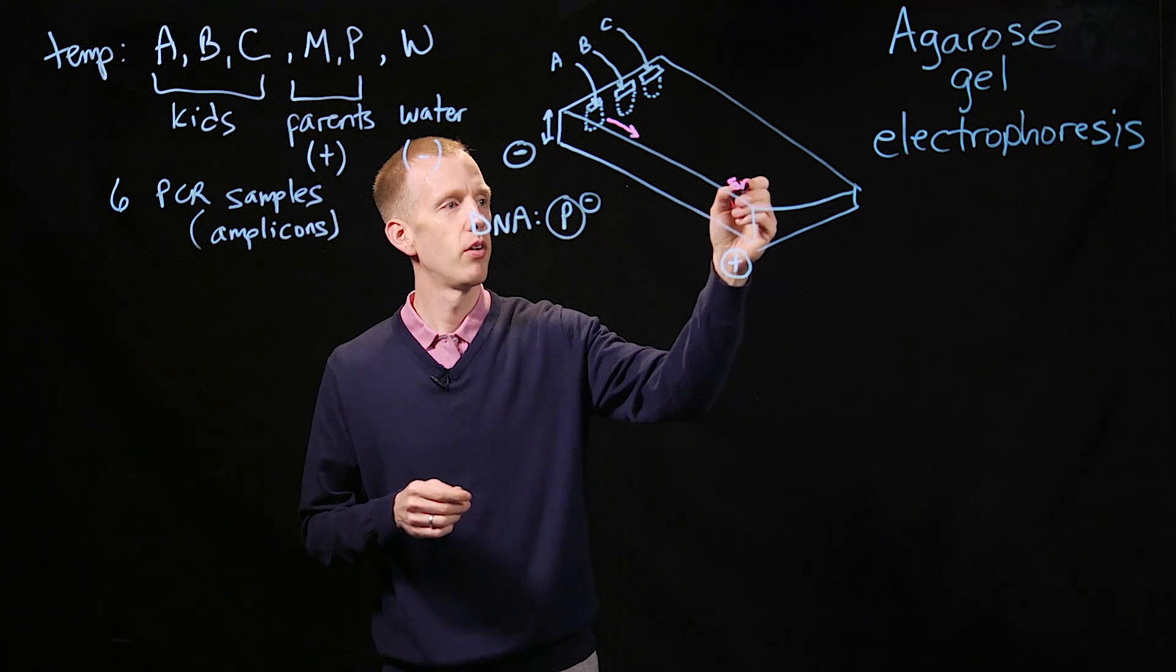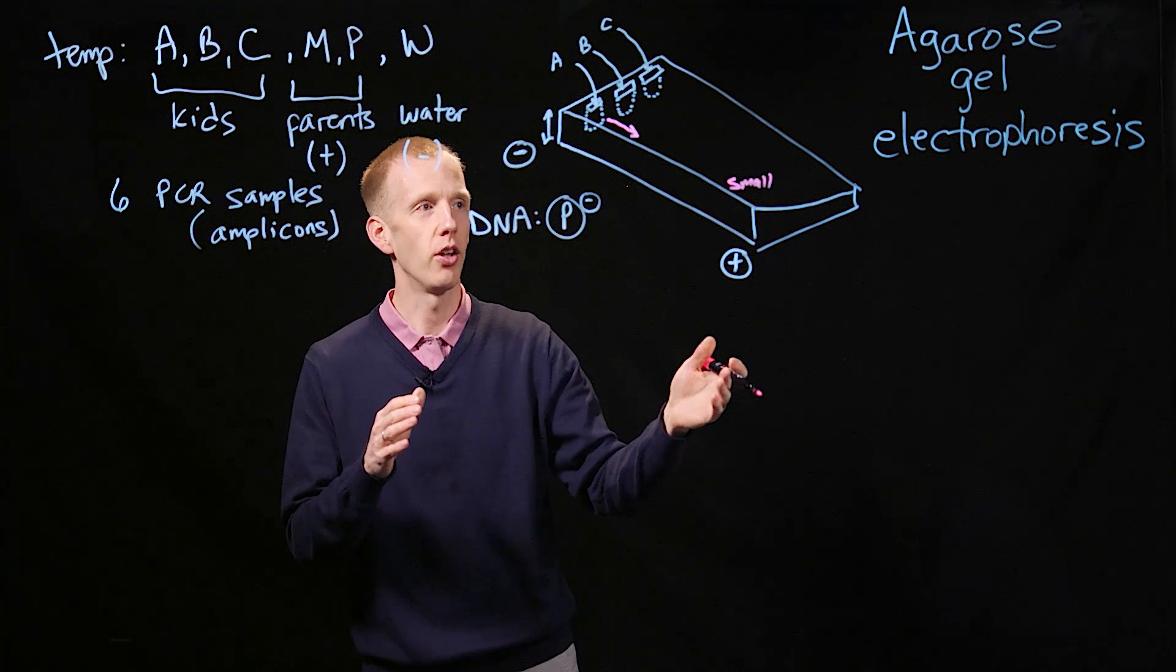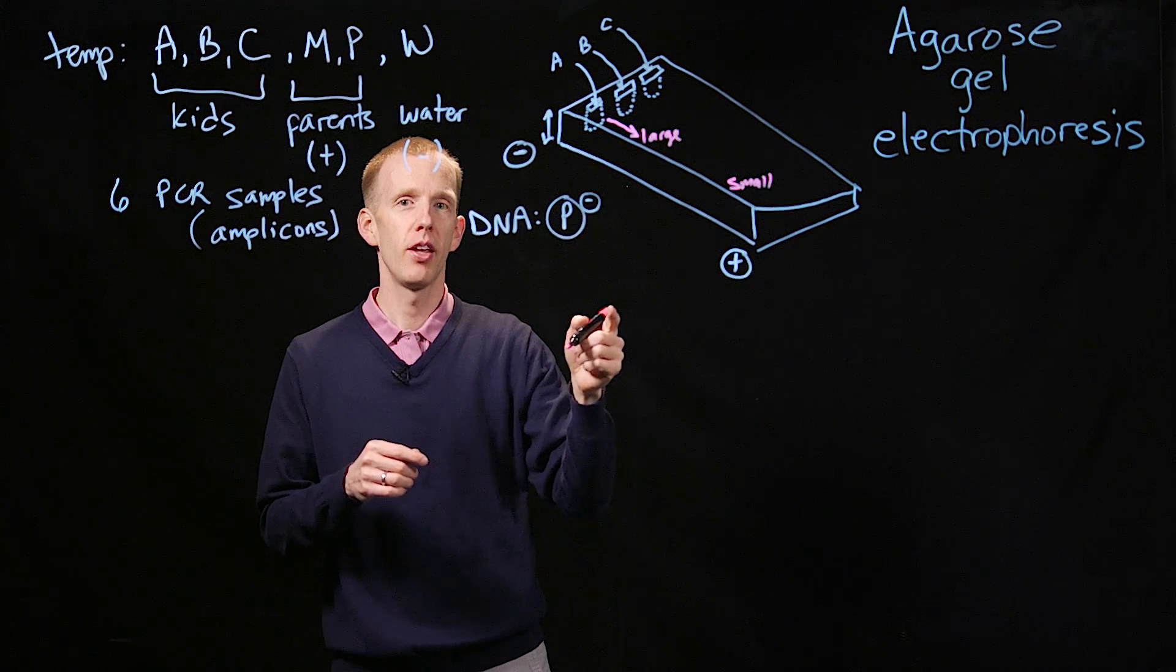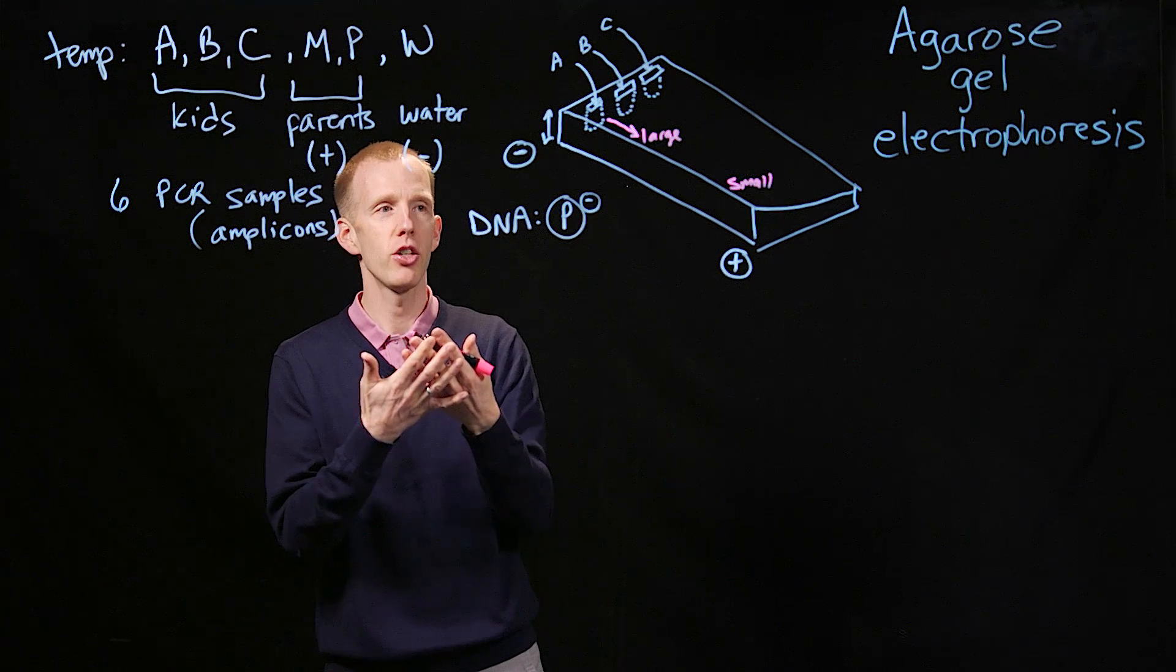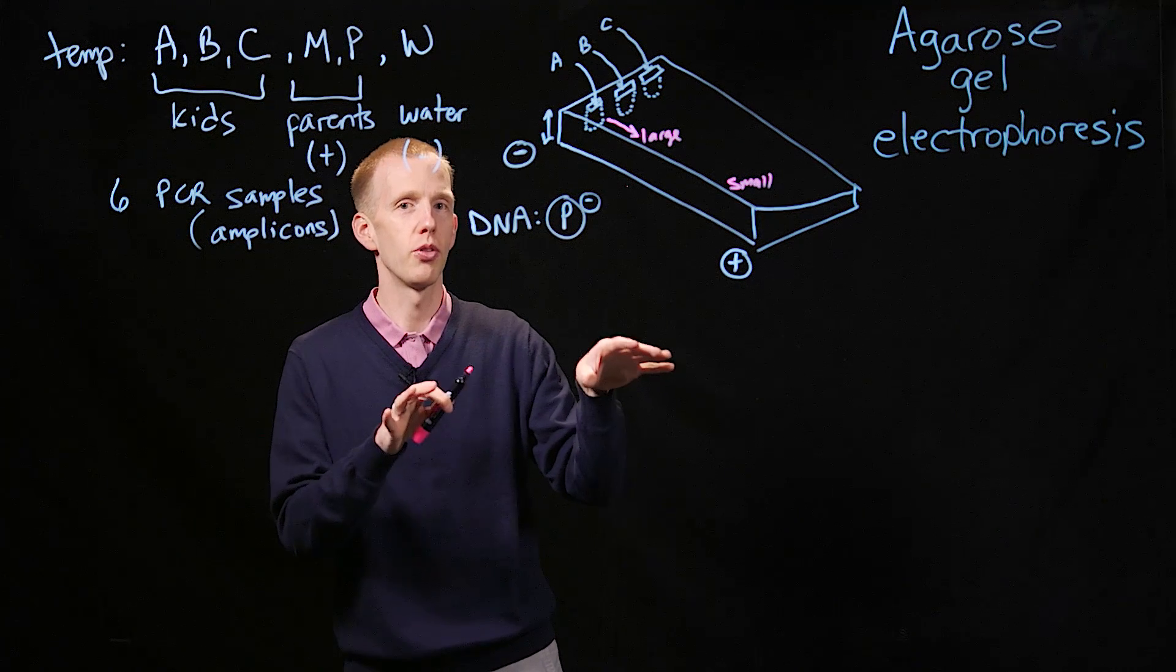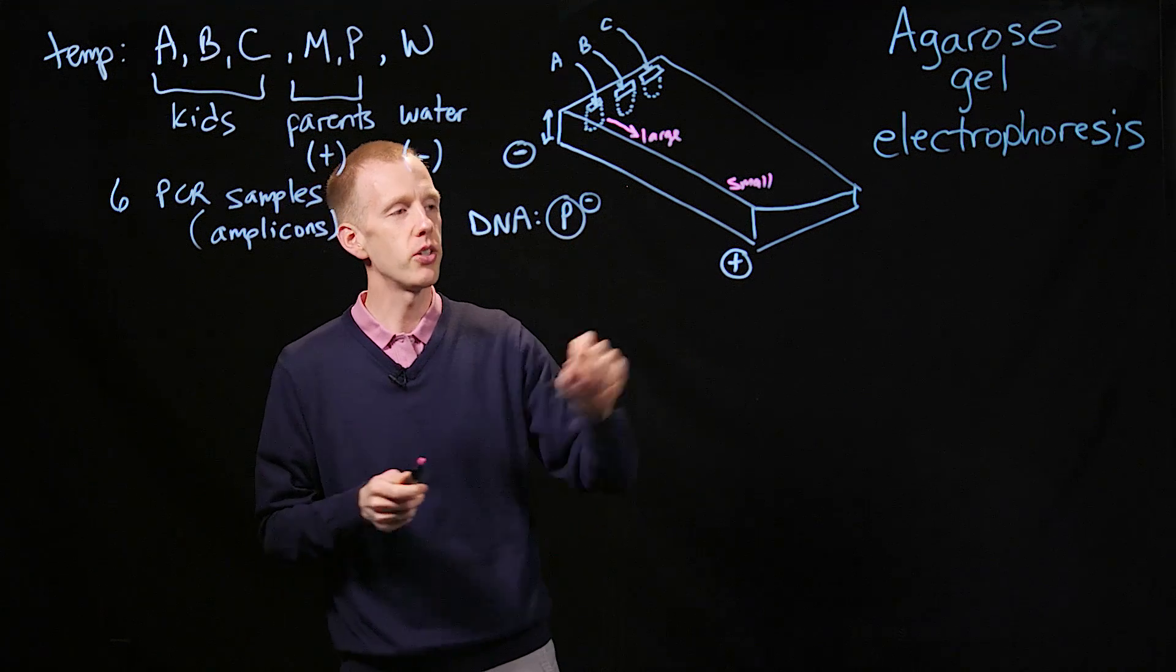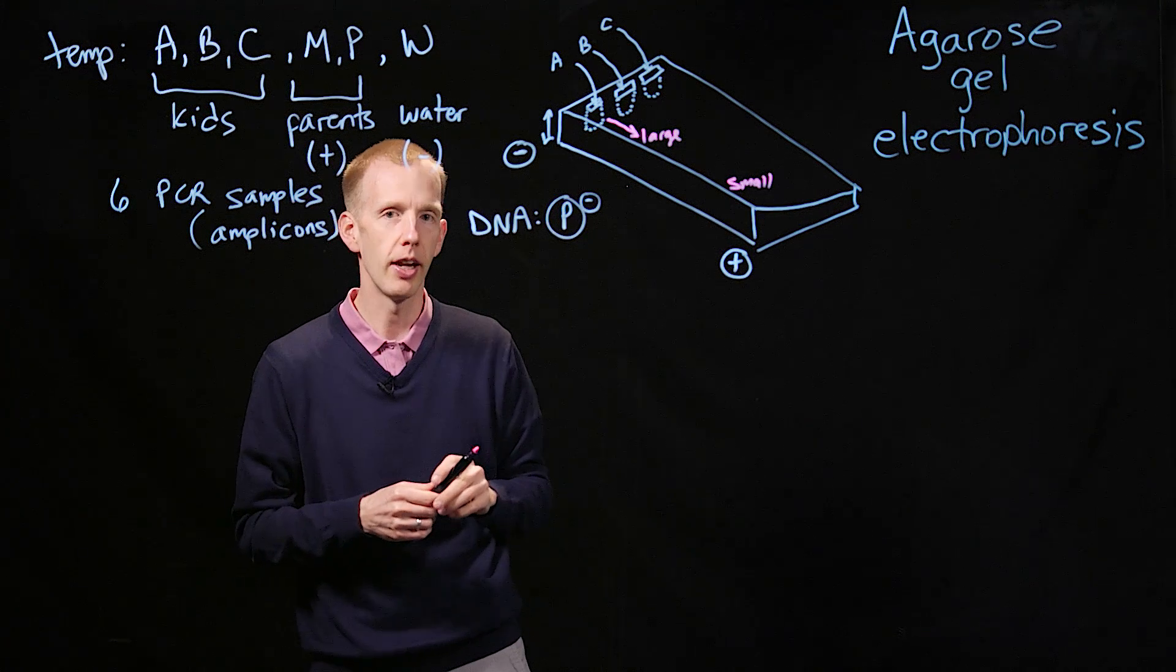The smaller fragments will migrate faster through the gel in a particular length of time than the large fragments. And that's because we're trying to push DNA through jello. And that jello makes a really fine mesh. The agar, when it's melted, makes a really fine mesh. And the smallest pieces of DNA can migrate through those holes in between the agarose molecules faster than a huge piece of DNA that's trying to be pulled through this mesh. So the small pieces of DNA go farther down the gel in a particular length of time than the large pieces of DNA.